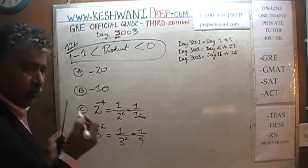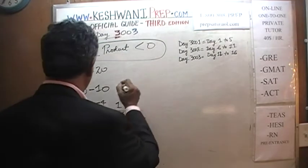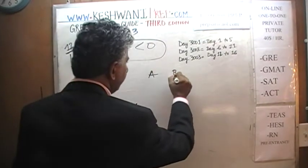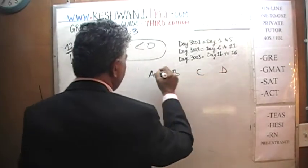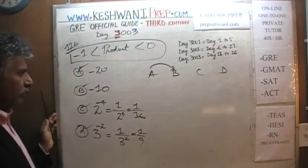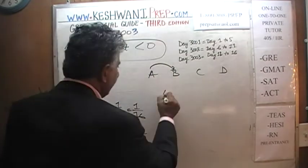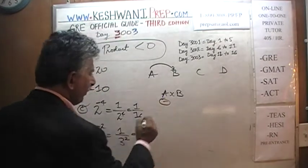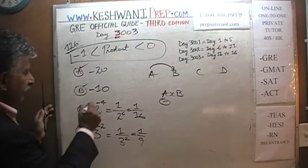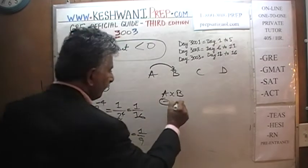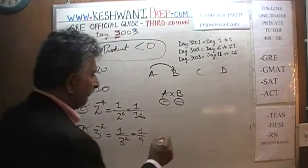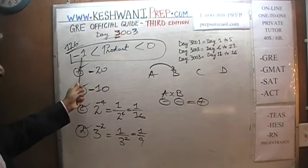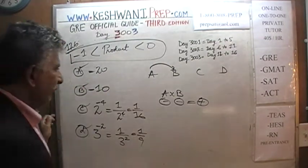We're going to go systematically so we don't miss anything. We have four quantities: A, B, C, and D. Let's worry about A times B. A is a negative quantity; B is also a negative quantity. Therefore A times B is going to be positive. We cannot have positive — we're looking for a product between negative 1 and 0. So A times B does not work.